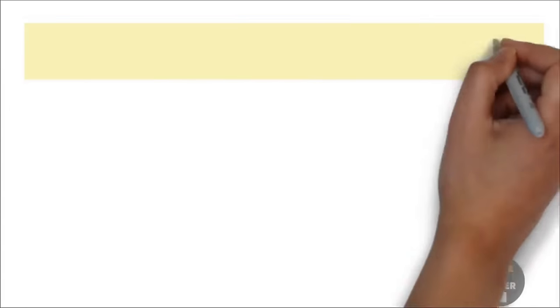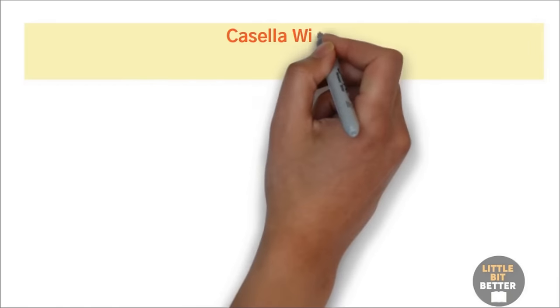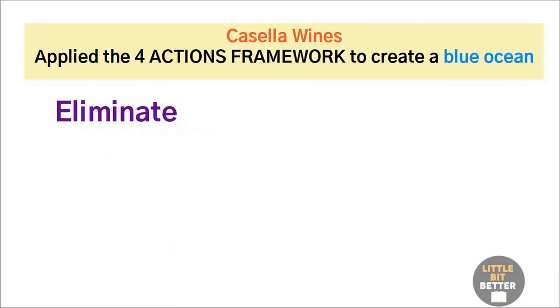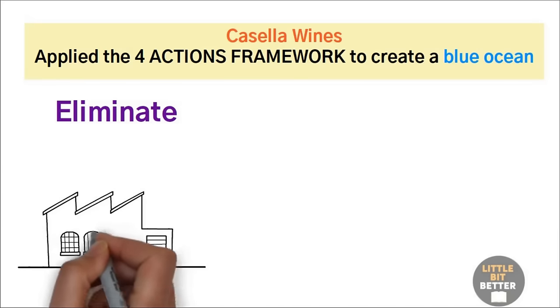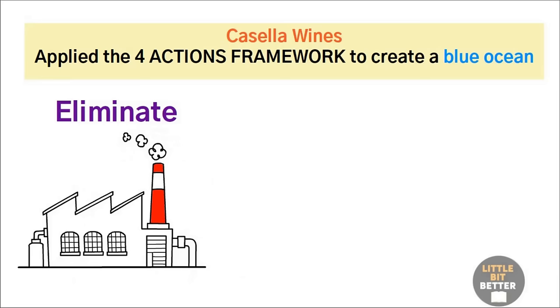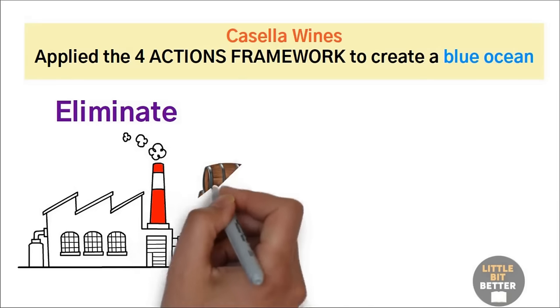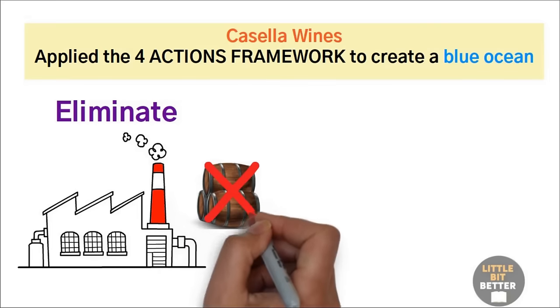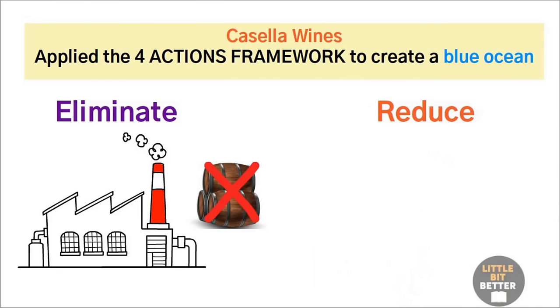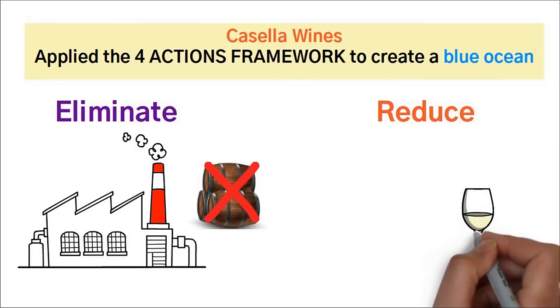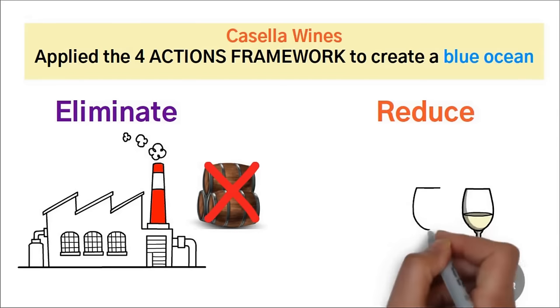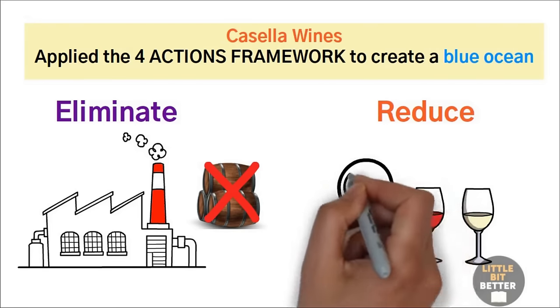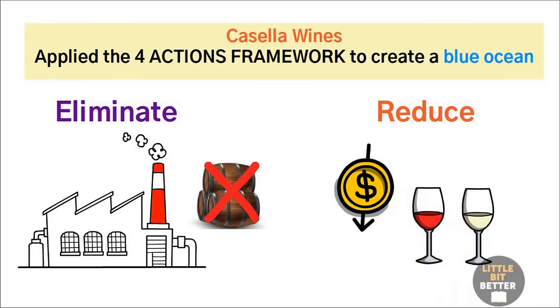Now, back to our example. Here is how Casella Wines applied the Four Actions framework to create a blue ocean. Eliminate. They eliminated all the factors the wine industry had long competed on, such as complexity and aging. With the need for aging eliminated, they also eliminated costs on oak barrels and storage. Reduce. They dramatically reduced the range of wines offered, creating only two. White Chardonnay and a red Shiraz. The simplicity of offering only two wines reduced the costs further. Plus, it made the wine selection process easier for non-wine drinkers.